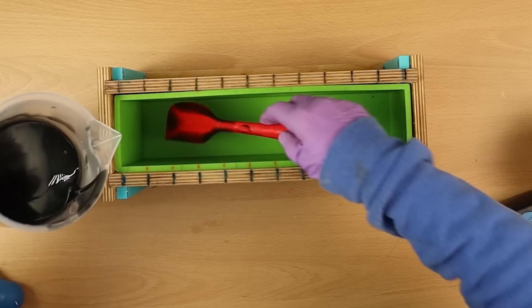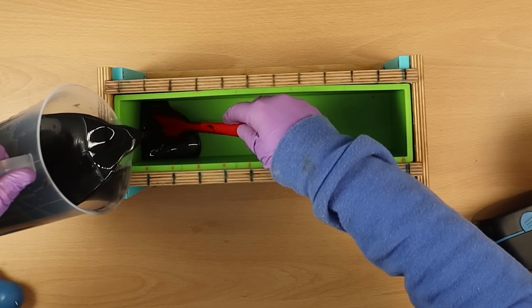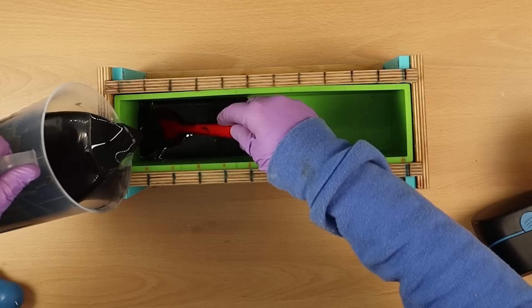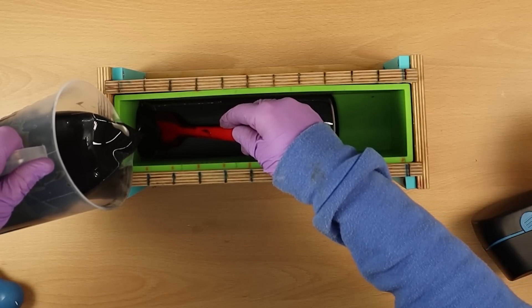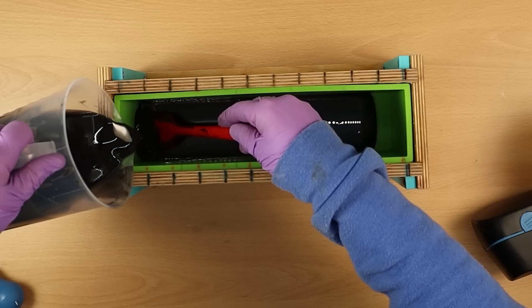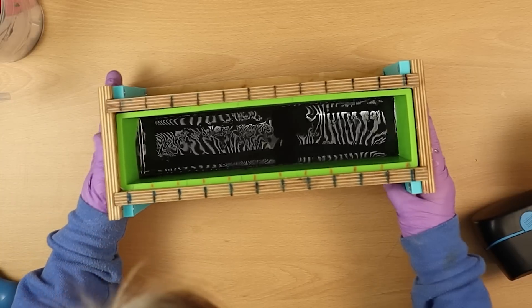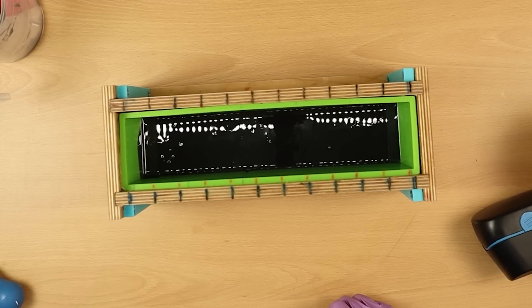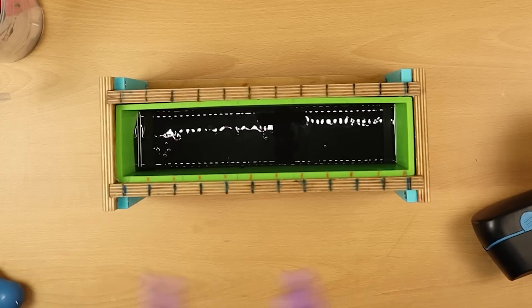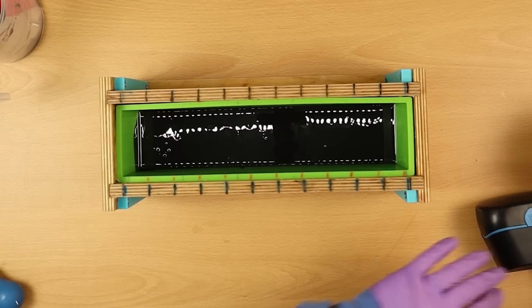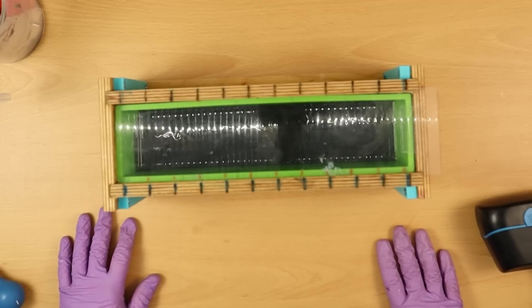I just want to simply pour it into this mold and then leave that to set up overnight. As it's black, I do want to make sure it goes through gel, so I will be popping it in my heated cupboard. There's that done, it's nice and level which is what I want. Let's cover that up and put that away until tomorrow.